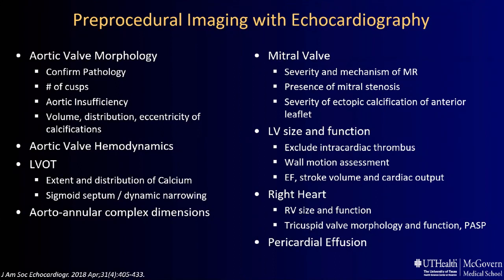What is the role of echocardiography in pre-procedural imaging? For the aortic valve: confirm the pathology, the number of cusps, evaluate for insufficiency, the volume distribution and eccentricity of calcification, assess aortic valve hemodynamics, the LVOT and aorto-annular complex dimensions, and then a comprehensive assessment of the rest of the heart — the mitral valve, LV, RV, any pulmonary hypertension, and any pericardial effusion.